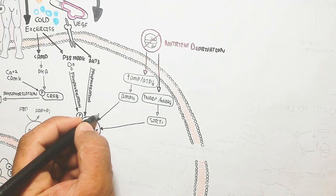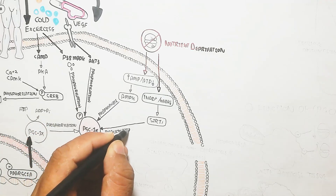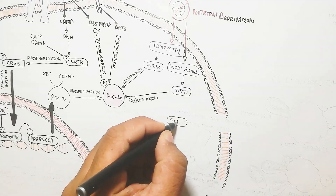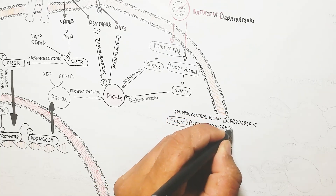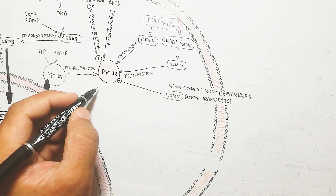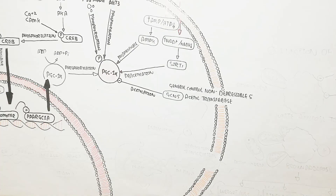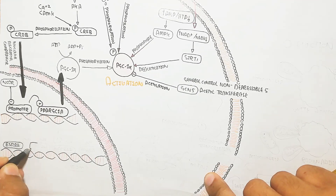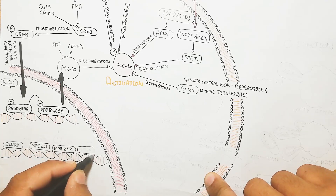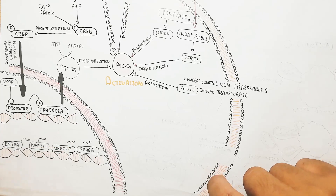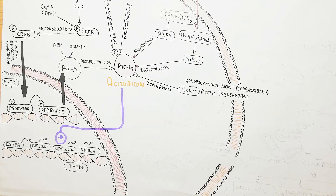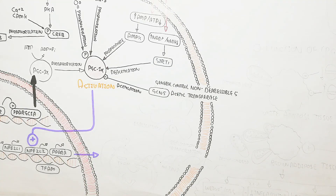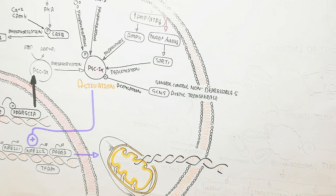AMPK phosphorylates and activates PGC1-alpha. Increased NAD+ alongside decreased NADH activates SIRT1, leading to deacetylation of PGC1-alpha. Conversely, GCN5 (general control non-depressible 5 acetyltransferase) inhibits PGC1-alpha through acetylation. Activation of the PGC1-alpha gene through these mechanisms — including fasting — triggers downstream genes such as ERRα, NFE2L1, NFE2L2, PPARα, and TFAM.